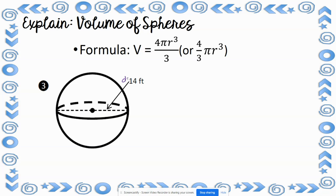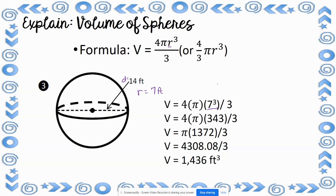For number 3, the diameter is 14 feet, so the radius is 7. Volume equals 4 times pi times 7 cubed, divided by 3. 7 cubed is 343; 343 times 4 is 1,372; 1,372 times 3.14 is 4,308.08. Divided by 3 gives a final volume of 1,436 feet cubed.